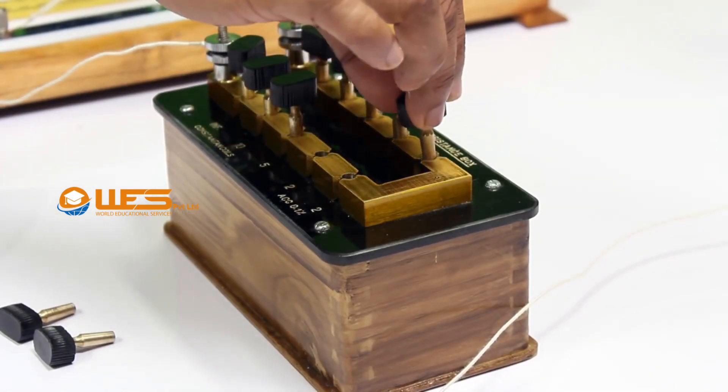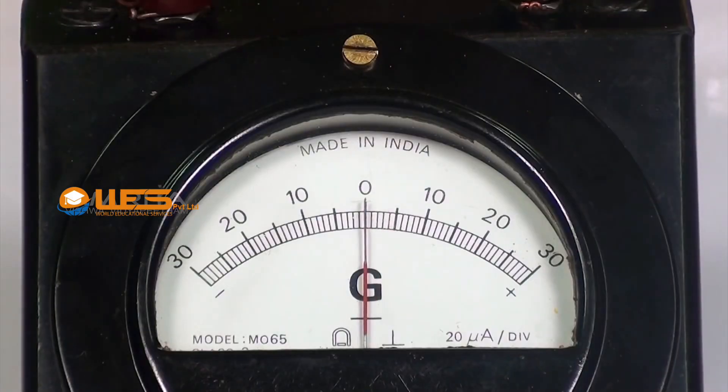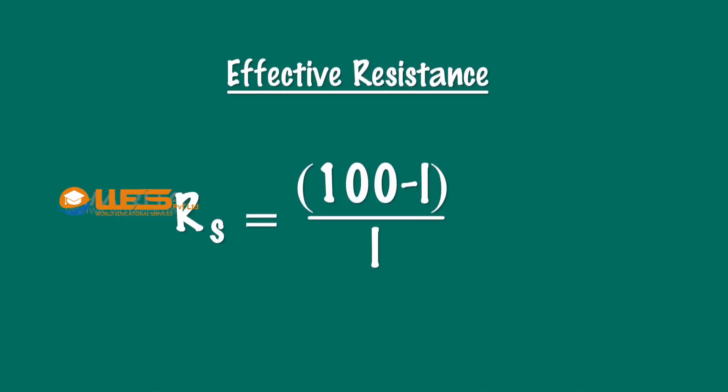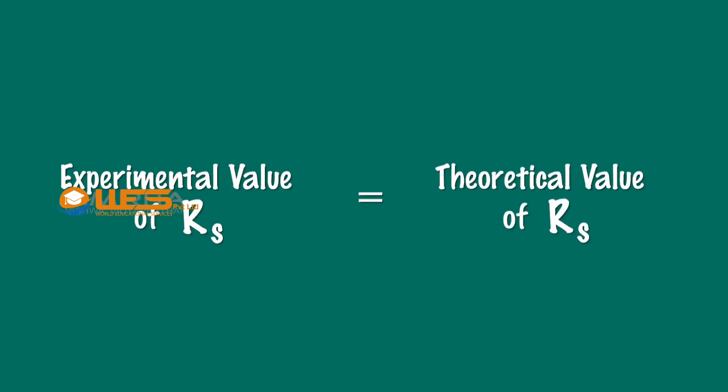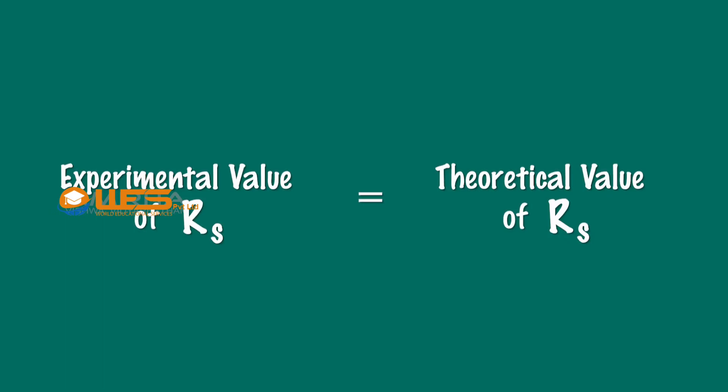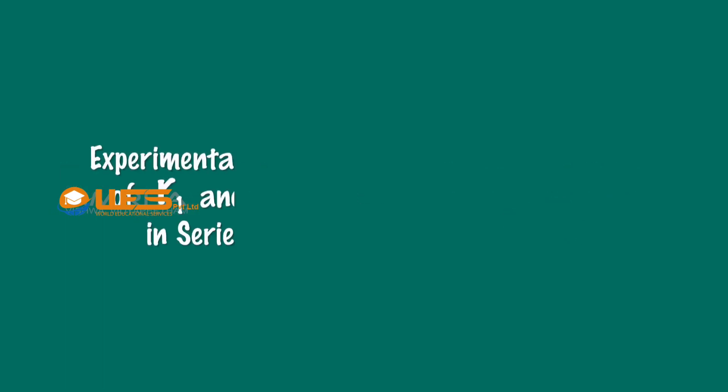Calculate the mean resistance RS for different values of R. The equation is RS = R1 + R2. If the experimental and theoretical values of RS are the same, then the law of resistance in series is verified.